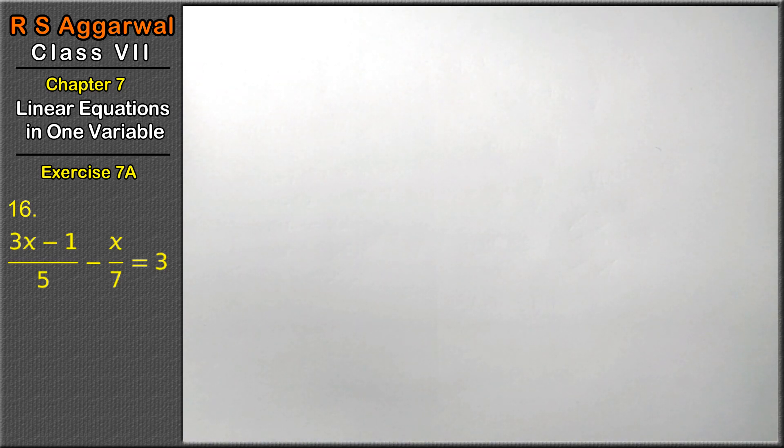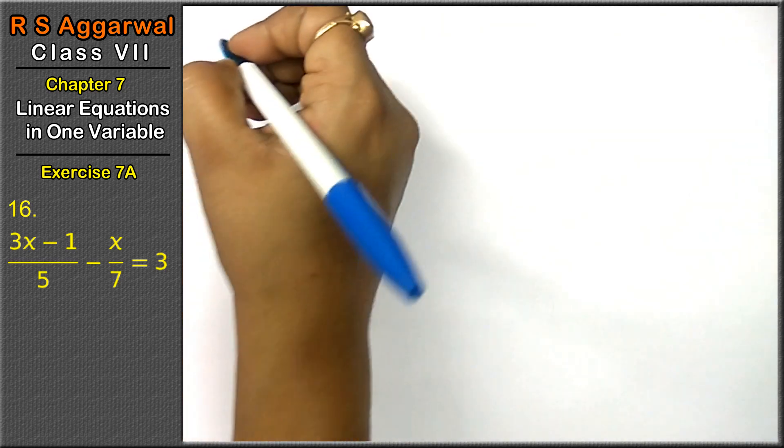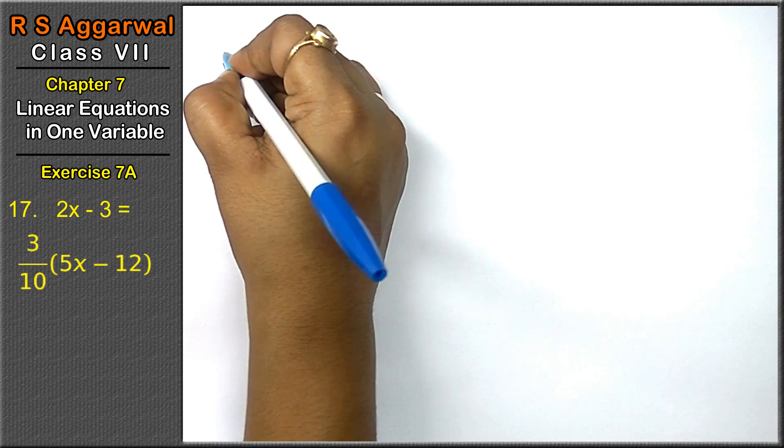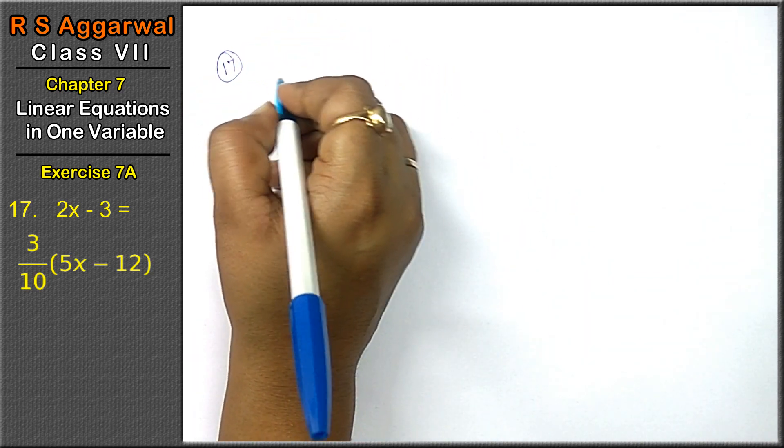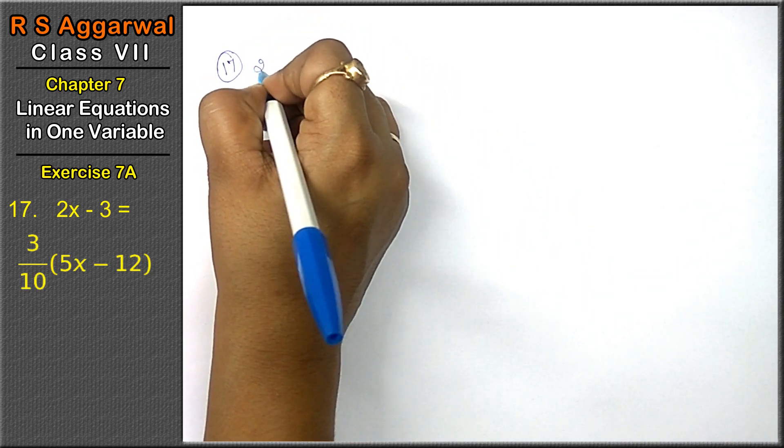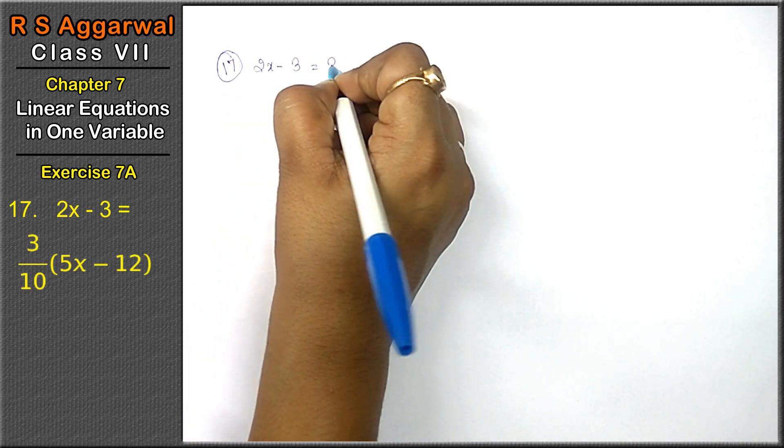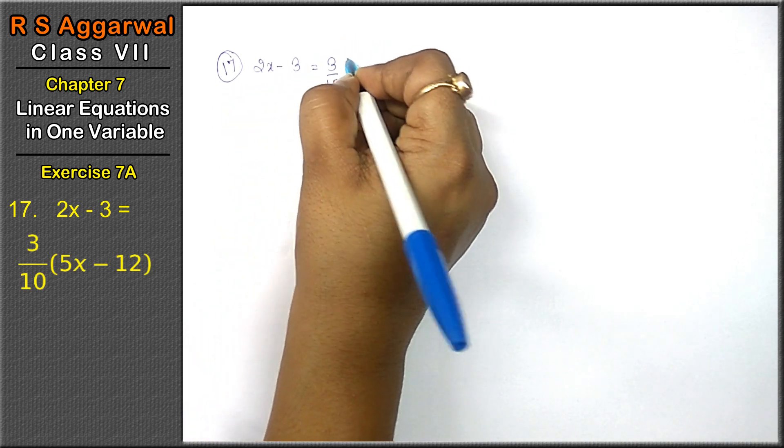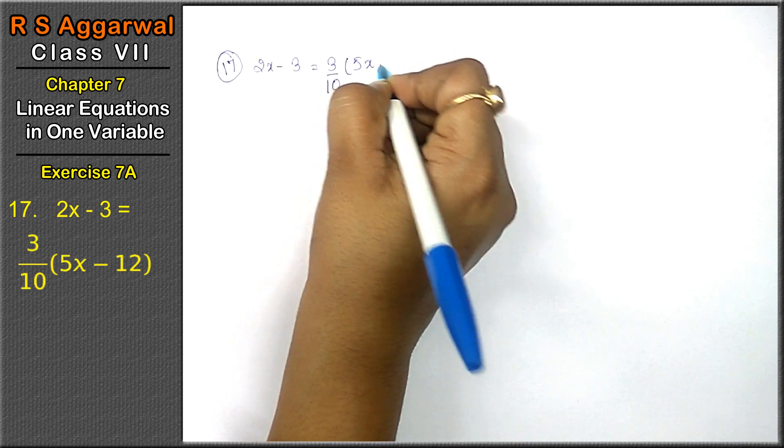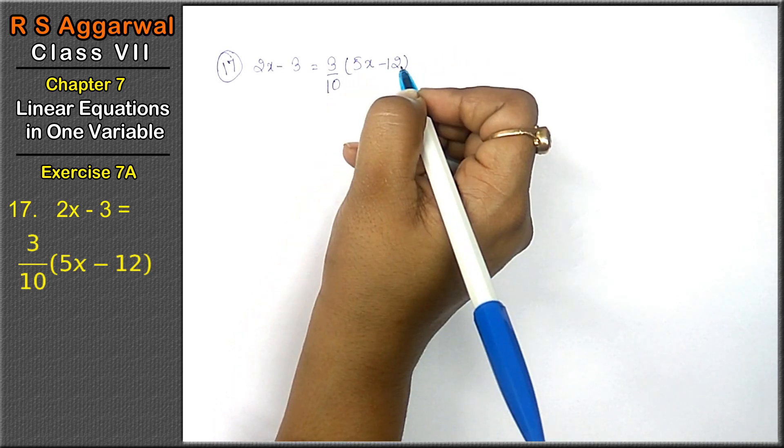Let's do 17th question. 17th question is 2x minus 3 equals 3 upon 10, 5x minus 12.